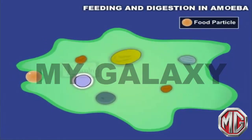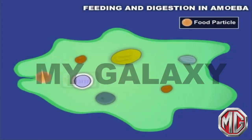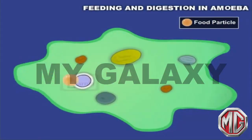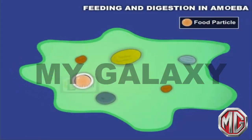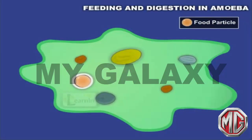It projects out one or more finger-like projections called pseudopodia, which it uses to trap other microscopic organisms or other food particles. The food is trapped in a food vacuole, and gradually the food is digested and absorbed.